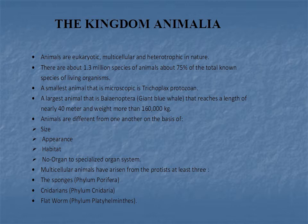There are about 1.3 million species of animals, about 75 percent of total known species of living organisms. The smallest animal is microscopic and belongs to phylum Protozoa — its name is Trichoplax. The largest animal is the whale, which belongs to Kingdom Animalia.